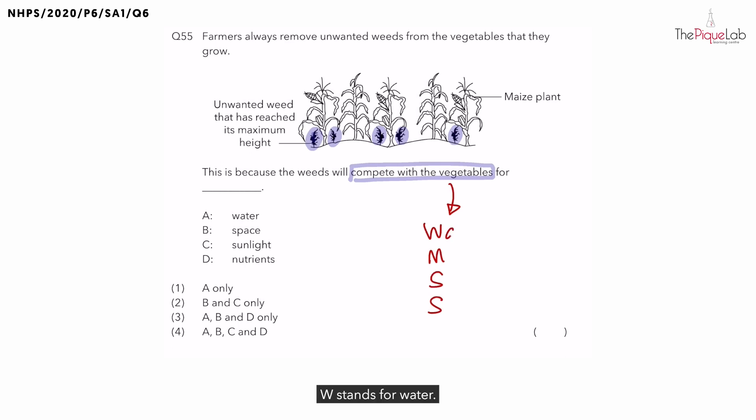W stands for water. M stands for mineral salts, which is also known as nutrients. S stands for space. And the other S stands for sunlight.